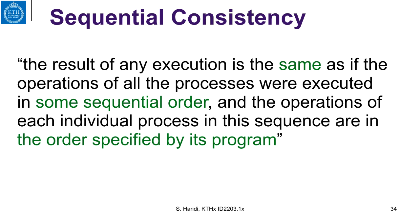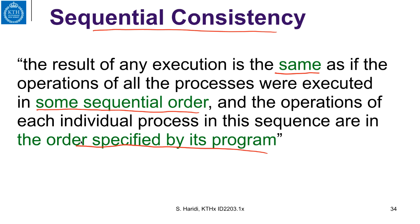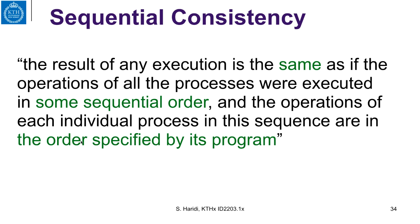Sequentially consistent executions are specified as follows. An execution is sequentially consistent if the result of any execution is the same as if the operations of all processes were executed in some sequential order, and the operations of each individual process in this sequence are in the order specified by its program. So the result appears as if all operations are in a sequence, but on each process the operations are executed in the same order as specified by its program. This is the informal definition of sequential consistency.